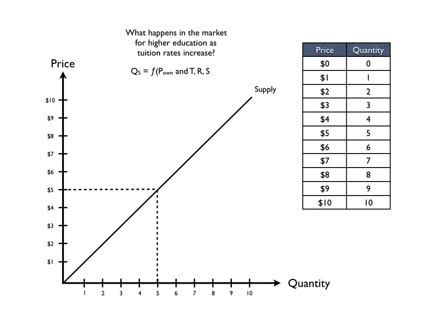And so last thing, what happens in the market for higher education as tuition rates increase? Now, the first two we looked at a change in supply - a decrease in supply, then an increase in supply. This one goes back to our original graph. This is an increase in the price of education, so it's going to be an increase in the quantity supplied of education, not a change in supply.